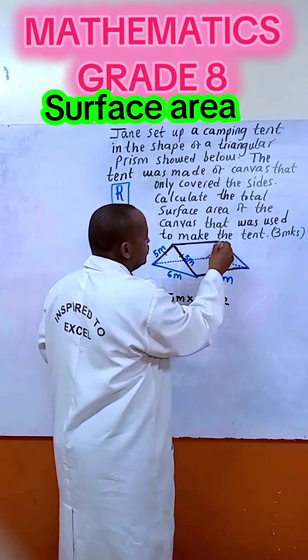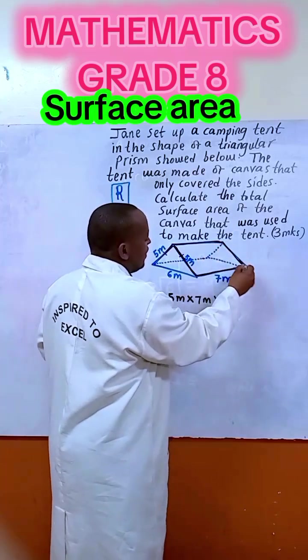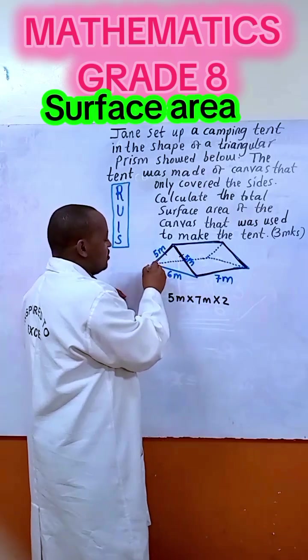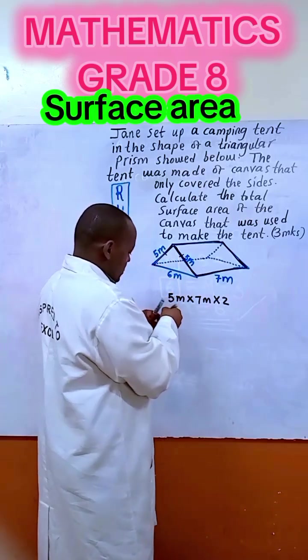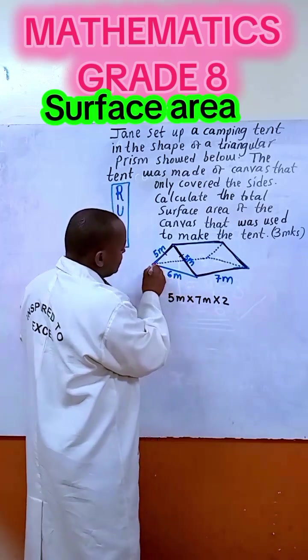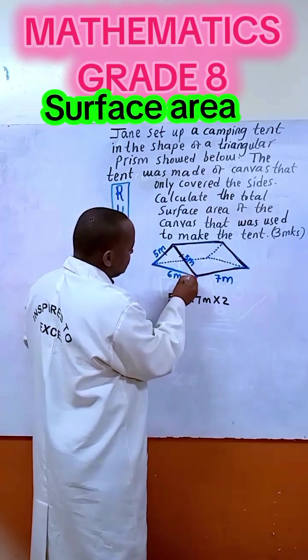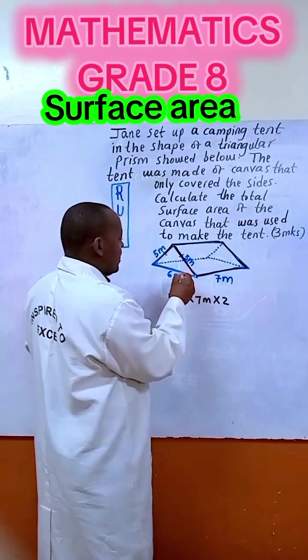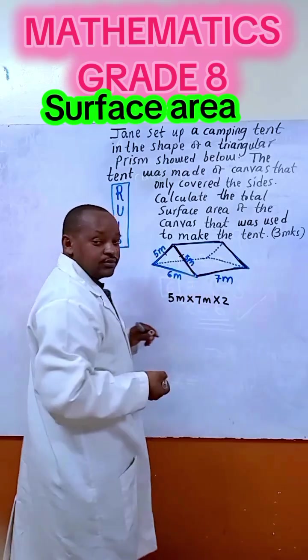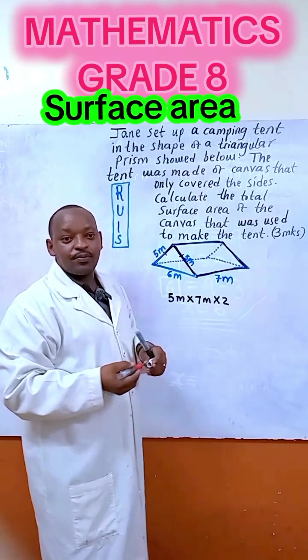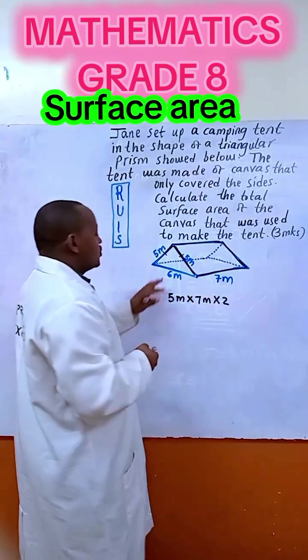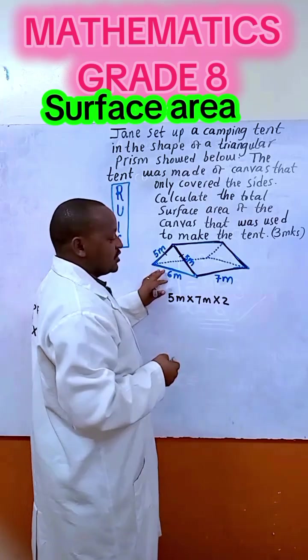After getting that surface, what should we do? We have another one here. Can you see this triangle which is formed here? Let me show you this triangle here which is 6 with a hypotenuse of 5. Can you see it?